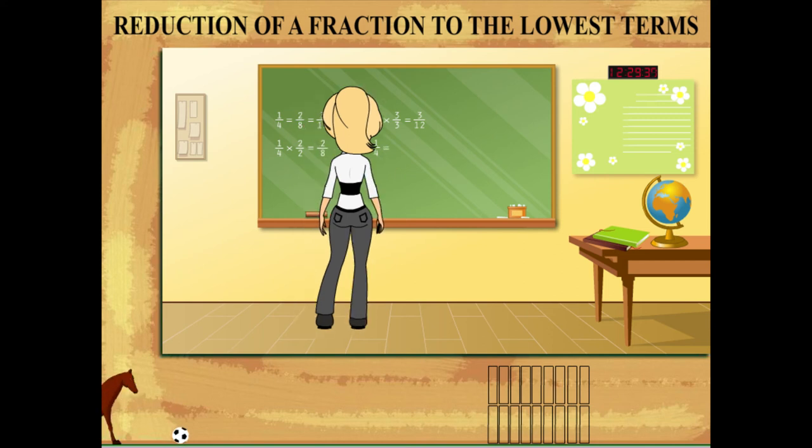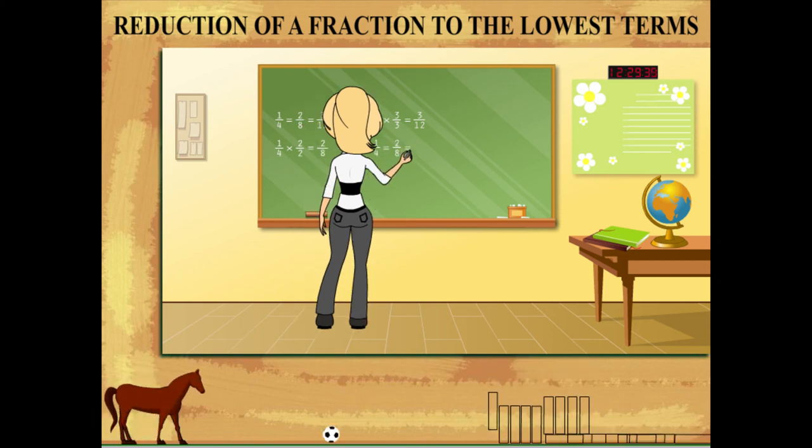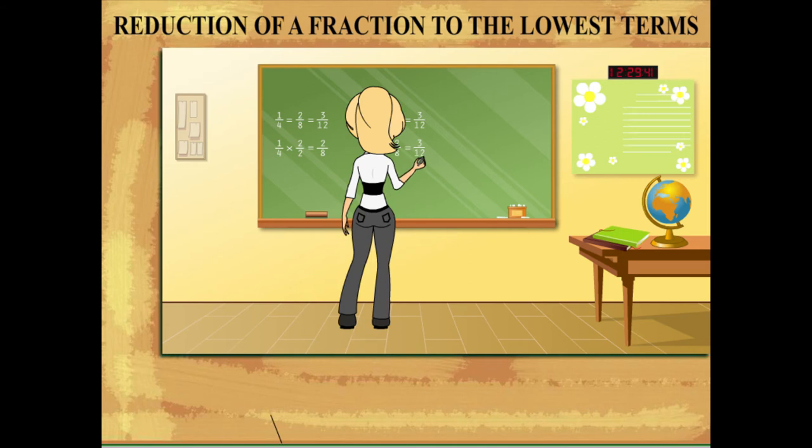Therefore, 1 by 4 equals 2 by 8 equals 3 by 12.